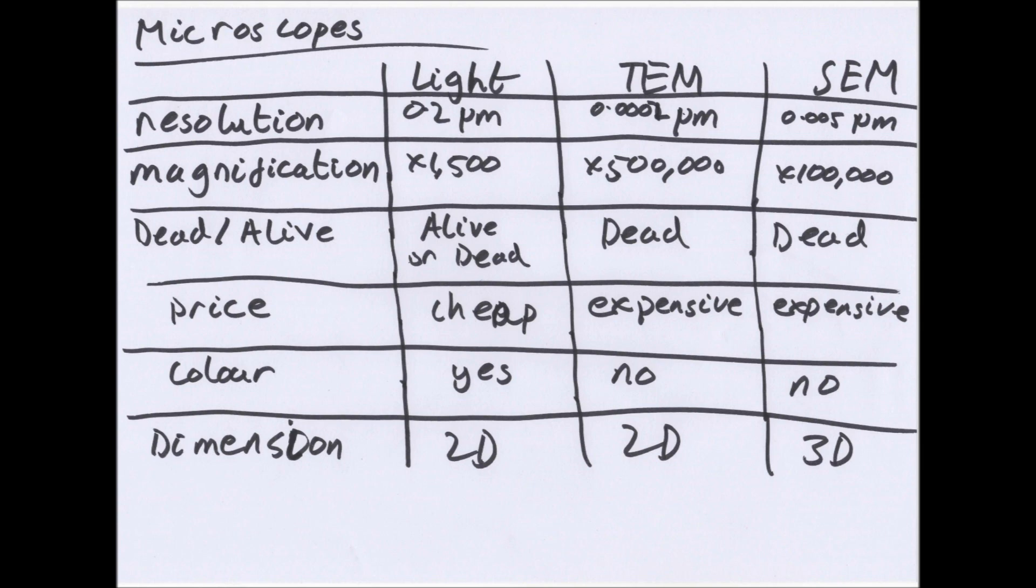Now firstly, two important definitions. Magnification is the degree to which the size of an image is larger than the object itself. So this would be times a certain number. And resolution is the degree to which it is possible to distinguish between two objects that are very close together. So if you had a resolution of two meters, it means if any two objects were closer than two meters, you would only be able to see them as one object.